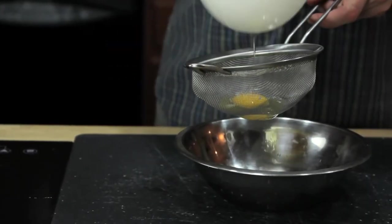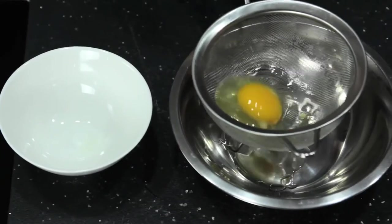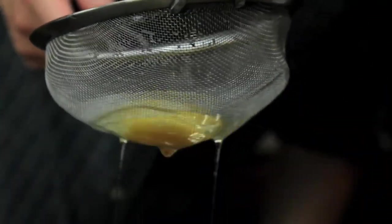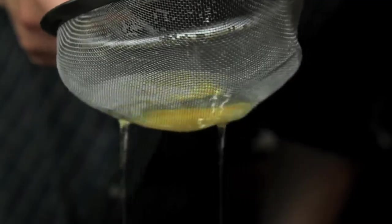You know, those really ugly ones with the wispy white floaters that completely ruin your brunch. To get rid of them, we're going to transfer our eggs to a fine mesh strainer and gently swirl it around until all the excess white is drained away. What you're left with is a nice, tight egg.